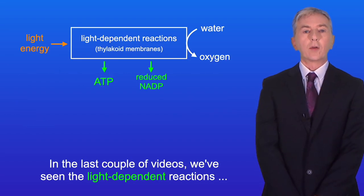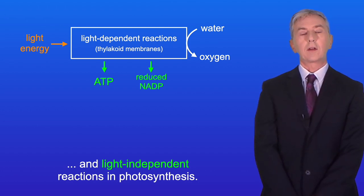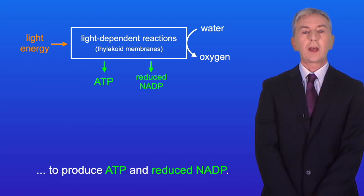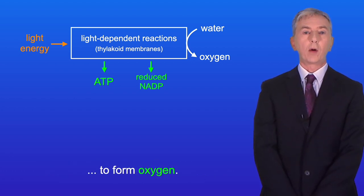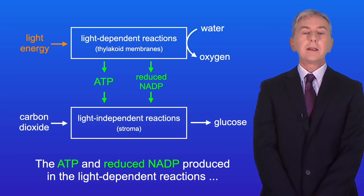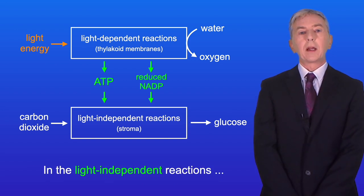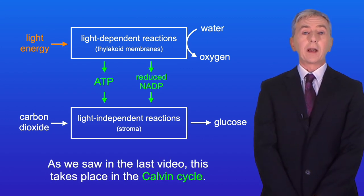In the last couple of videos we've seen the light-dependent reactions and light-independent reactions in photosynthesis. The light-dependent reactions use light energy to produce ATP and reduced NADP, and water is split by photolysis to form oxygen. The ATP and reduced NADP produced in the light-dependent reactions are then used in the light-independent reactions, where glucose is produced using carbon dioxide — this takes place in the Calvin cycle.